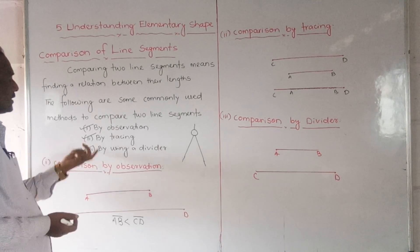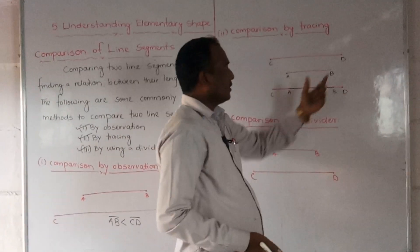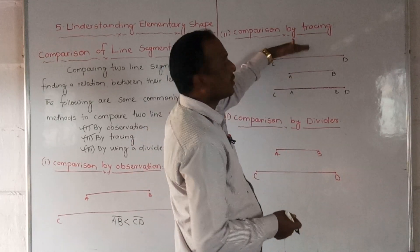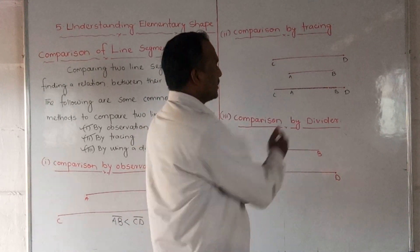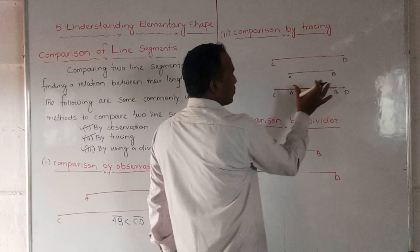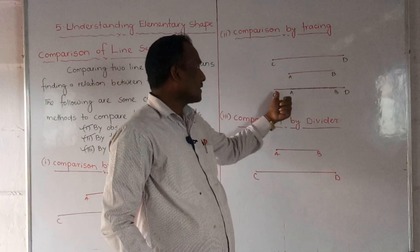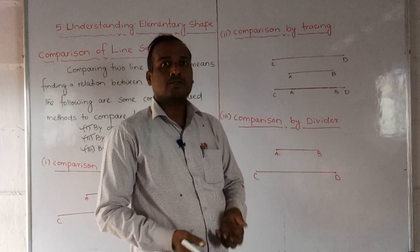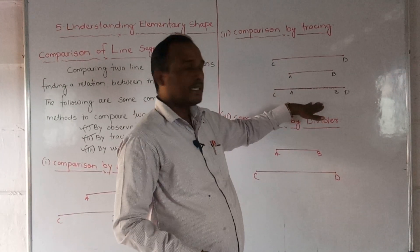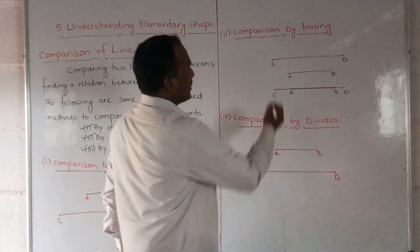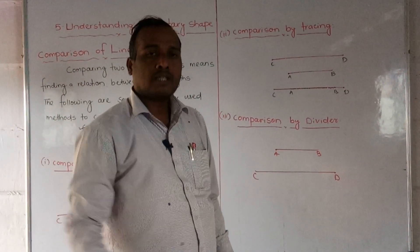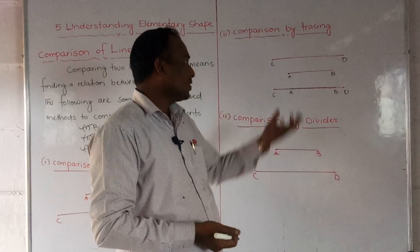The second method is by tracing. We can compare by tracing. We observe that we keep CD as a reference and place AB on top of CD. When AB does not extend to the end of CD, we can find out that CD is greater. So if we align one end — say C equals A — and then B does not reach D, we can observe that CD is greater. This is called retracing.